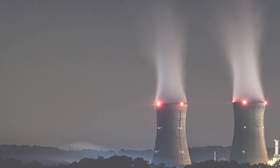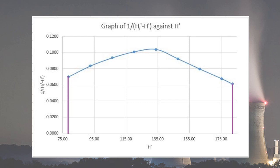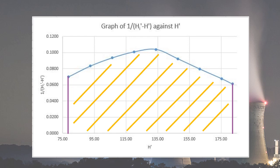After that, NTG is calculated using the trapezoidal method with data from the previous table. Alternatively, by plotting the graph of 1 over (HI prime minus H prime) against H prime, the number of transfer units NTG can be obtained by calculating the area under the curve.